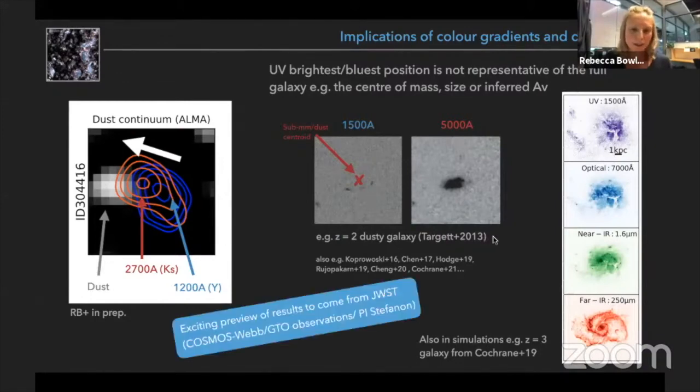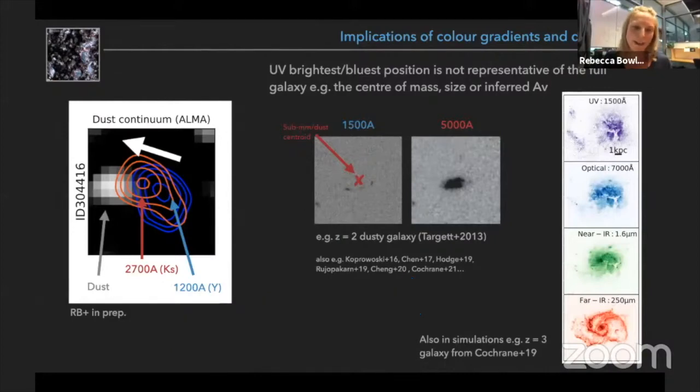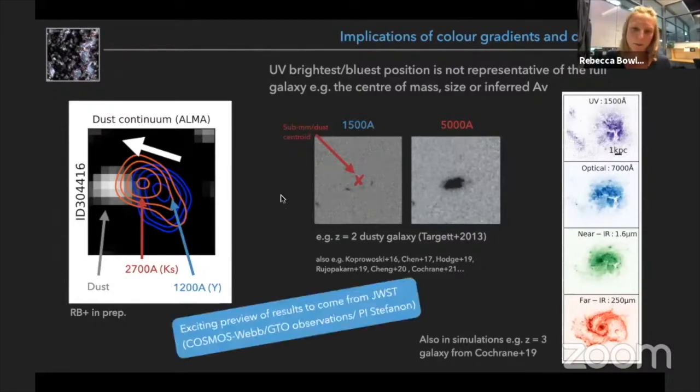So I'm almost out of time, but just to wrap up then, what we really need is redder imaging for these high redshift sources, and of course you know what I'm going to say next, this is exactly what we're going to get with James Webb. And I see this as a very exciting preview of the results we're going to get from James Webb.